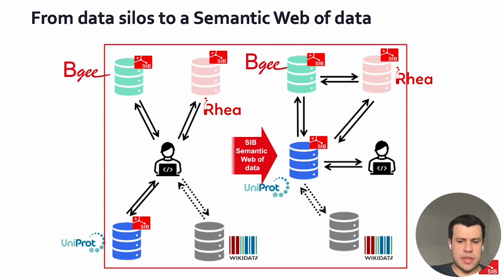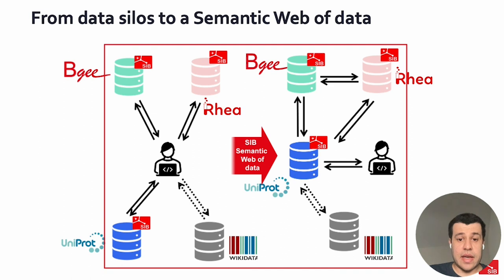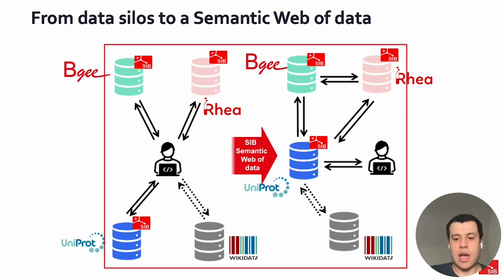Now, with this semantic web of data of SIB, it's possible for the user, from one database such as UniProt, to query not only its own data, but also the data of other SIB databases, including external ones such as Wikidata. By doing that, it results in integrated data retrieval from multiple data sources to answer a given query of the user.